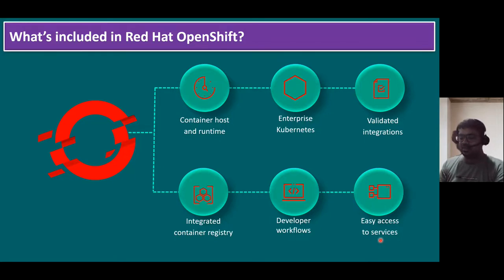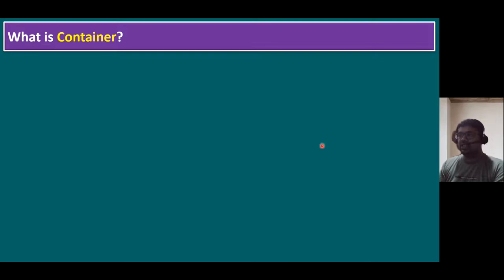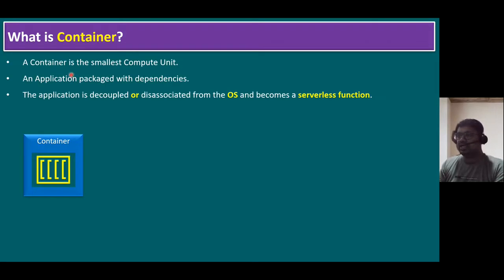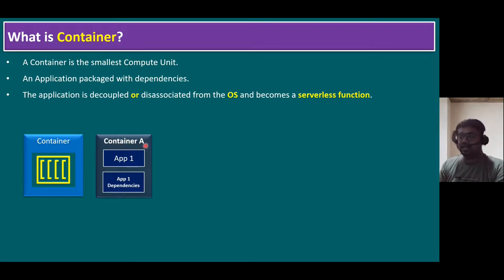Let's start with basics. What is a container? A container is the smallest computing unit — an application packaged with its dependencies. For example, within container A we have application one, and that application has dependencies. Just like installing Internet Explorer requires an OS with dynamic link libraries, or installing WinSCP or PuTTY on Windows Server requires certain dependencies, each container packages an application along with its specific dependencies.